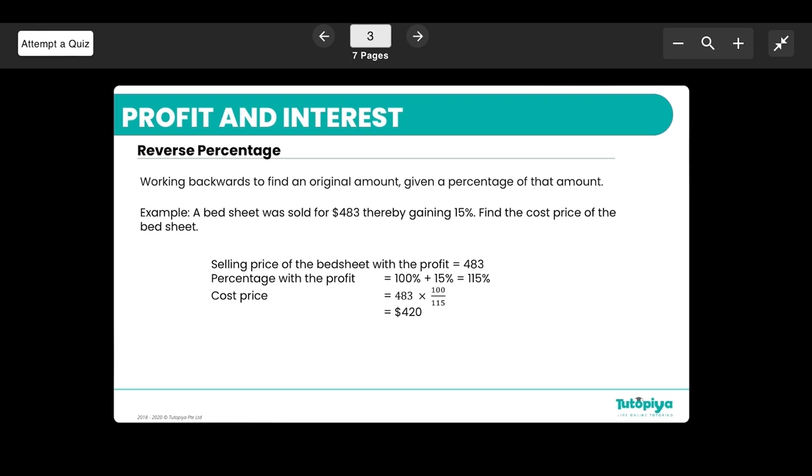A bed sheet was sold for $483, thereby gaining 15%. So that is basically, this $483 is with the 15% profit. We want to find the cost price of the bed sheet, what was the original beforehand. If this is the percentage with the profit, that means this total percentage that we have here is 115%.